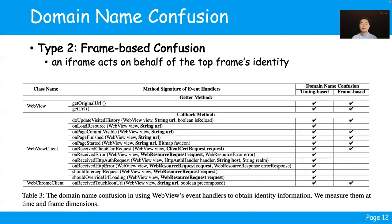The second type is frame-based confusion, meaning an iframe can act on behalf of the top frame's identity. The super app often relies on event handlers of the WebView component to obtain identity information. However, we find that most of these event handlers only return the top frame's URL and cannot be used to properly implement identity checks. In our study, we find 8 out of 14 event handlers are vulnerable to this confusion, including onPageStarted, onPageFinished, and getURL, which are commonly used by existing super apps.